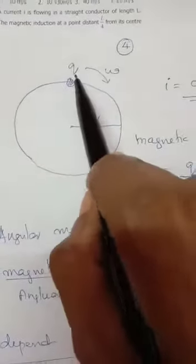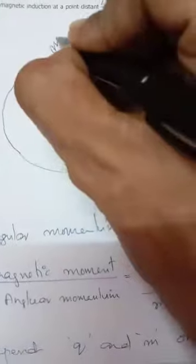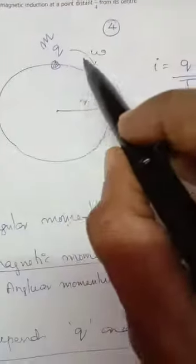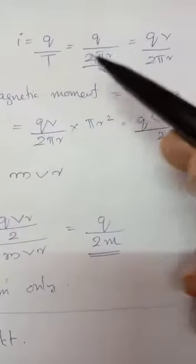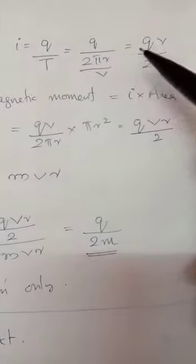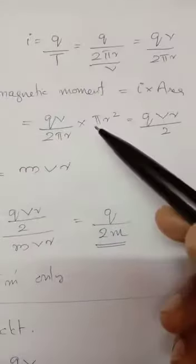The situation: q charge, mass m, angular omega, and radius r. Circulating charge is equal to current. Current equals q by t. Time period is 2πr by v, therefore qv by 2πr. That is the current.